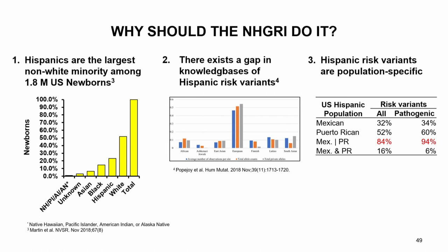Why should NHGRI address this? Hispanics are the largest non-white minority among 1.8 million U.S. newborns — about a quarter are Hispanic. There is a well-documented gap in existing knowledge bases of Hispanic risk variants. Looking at work by Pope Joy et al., the majority of known risk alleles are from individuals of European ancestry, and only about 10% are in Hispanics. Furthermore, Hispanic risk variants are population-specific — you can't treat Hispanics as one homogenous group.